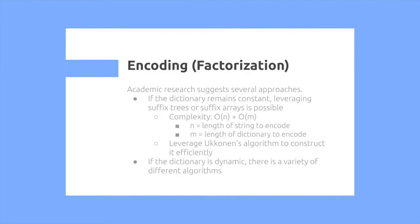For encoding, which is also known as factorization, there are several academic research papers to make this more efficient. The brute algorithm is quadratic time. You can reduce this to O(n) plus O(m) time if you use a static dictionary, which doesn't change according to the time window. You can leverage suffix trees and suffix arrays in order to accomplish this.